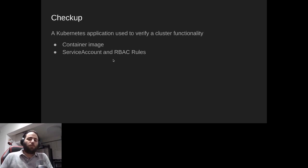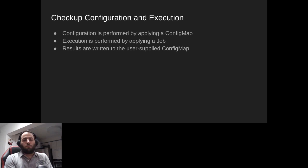How do you configure and execute a checkup? The configuration is performed using a user-supplied ConfigMap object, and the execution is performed by applying a Job that will be linked to this ConfigMap. The results of the checkup will also be written to the same user-supplied ConfigMap that you configured your checkup with.